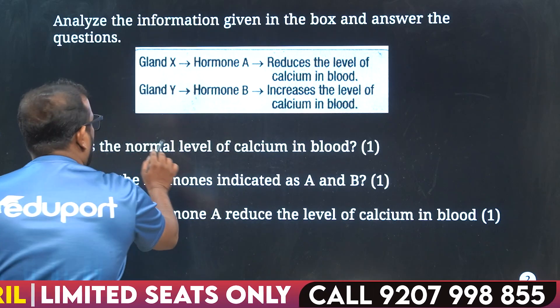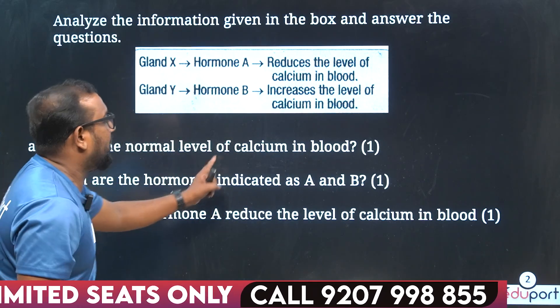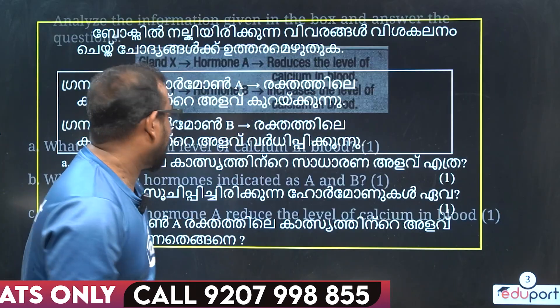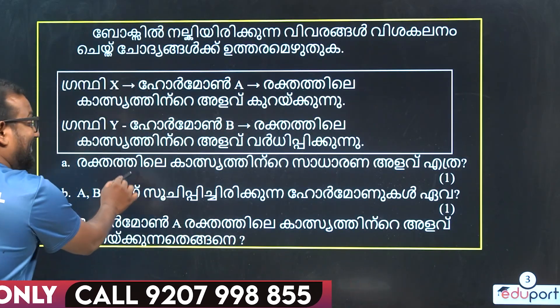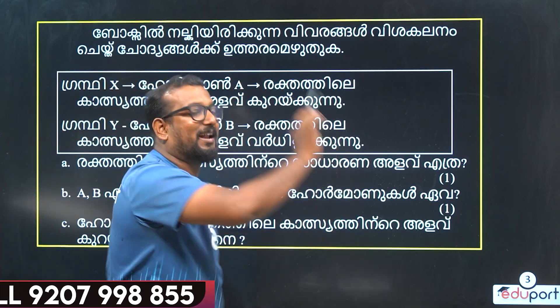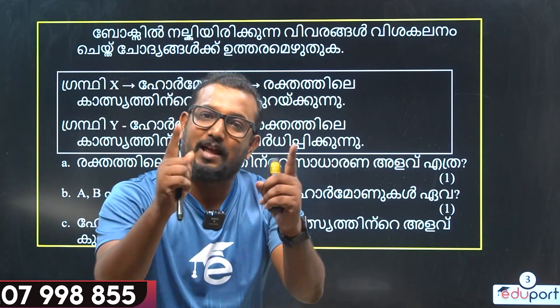What is the normal level of calcium in the blood? Calcium is 9 and a half — how?